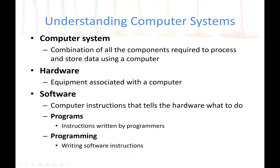A computer system is a combination of all the components required to process and also store data using a computer. A computer system will consist of both the computer hardware and the computer software, and all the possible components we need in order to process data or solve problems using computers.